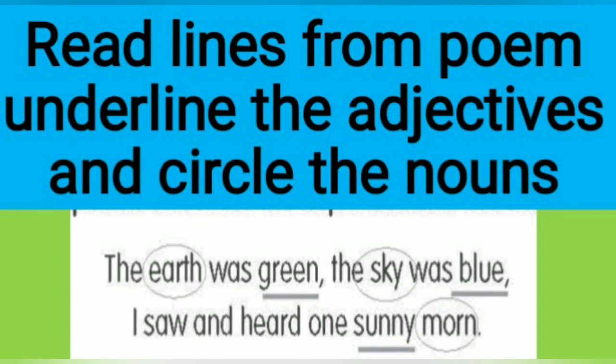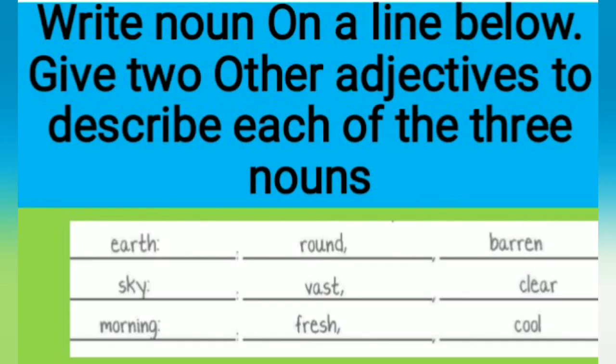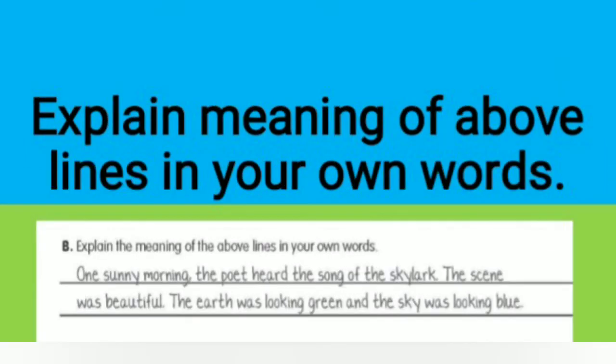Write each noun on a line below and give two other adjectives to describe each of the three nouns. The nouns are earth, sky, and morning. Adjectives for earth: round, barren. Adjectives for sky: vast, clear. Adjectives for morning: fresh, cool.